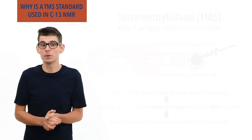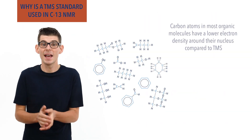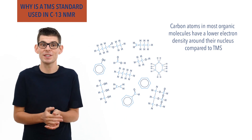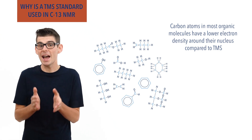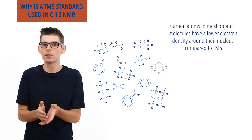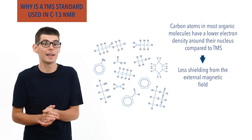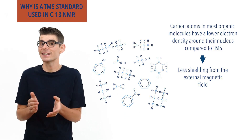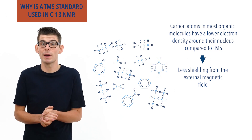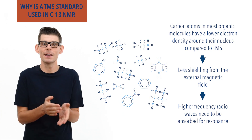In all other organic molecules, carbon won't have such a high electron density around it, as it's rare for carbon to be bonded to other atoms with a lower electronegativity than itself. As a result, a carbon nucleus in an organic molecule has less shielding around it, meaning it experiences more of the external magnetic field during NMR, making it slightly harder to flip the spin of the nucleus, meaning higher energy radio waves of a higher frequency are needed compared to the carbon atoms in TMS.